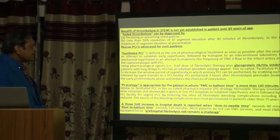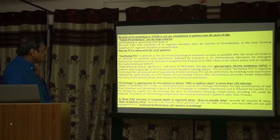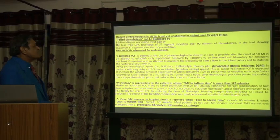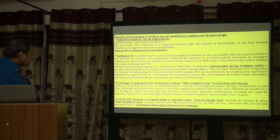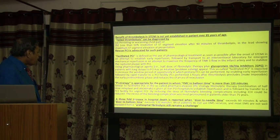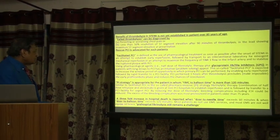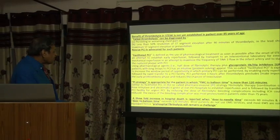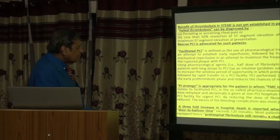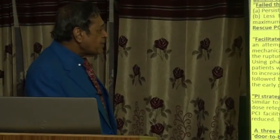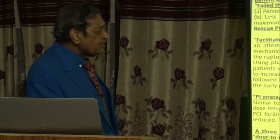The pharmacoinvasive strategy is appropriate for patients in whom first medical contact to balloon time is more than 120 minutes. Similar to facilitated PCI, in the pharmacoinvasive strategy, a combination of half-dose reteplase and a GPI is given at non-PCI hospitals to establish reperfusion, followed by transfer to a PCI facility for urgent PCI. By reducing the dose of the pharmacological agent, bleeding complications including intracranial hemorrhage can be reduced. The excess bleeding risk was most pronounced in patients older than 75 years. A threefold increase in hospital death is reported when door-to-needle time exceeds 60 minutes and when door-to-balloon time exceeds 120 minutes.